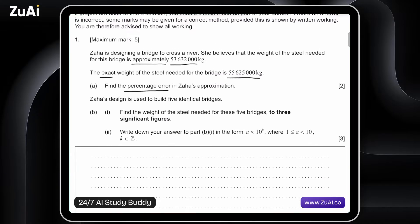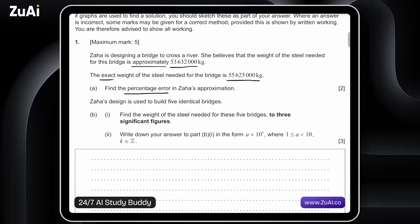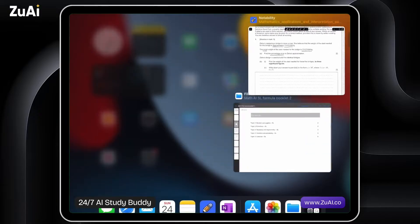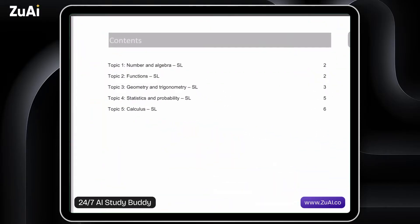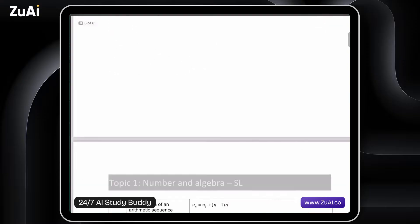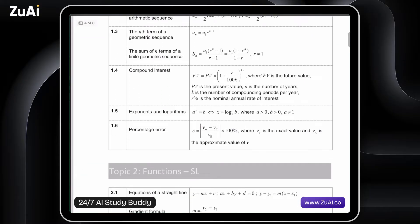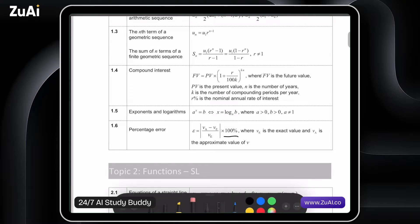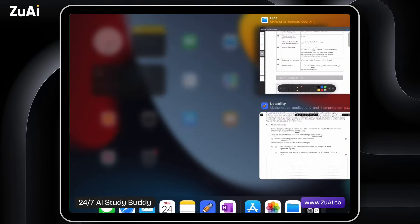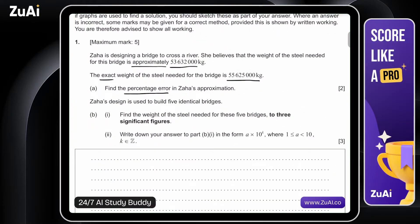Percentage error is given by estimate minus exact over our exact value, and we want to represent this as a percentage. So in the formula booklet, this is under topic number 1, number and algebra. And if we go down here, 1.6 percentage error. Percentage error is equal to estimate minus exact over exact, and then we want to represent this as a percentage. So the percentage difference, the percentage in which we deviate from our exact value.